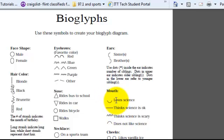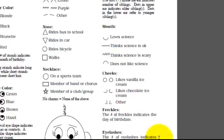The shape of your mouth shows how you feel about science. Your cheeks show what kind of ice cream you like. The number of freckles on your face shows the date of your birthday, and the number of eyelashes you have shows the number of pets that you have.